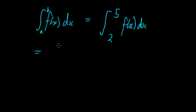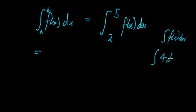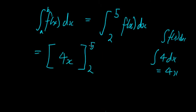So how do we solve this? What it means is we first integrate — we calculate as if the terminals 5 and 2 weren't there. So we integrate f(x) dx, and since the function is 4, integrating 4 dx gives us 4x. That means we now have 4x evaluated between 5 and 2. We move the terminals up, and we have the antiderivative 4x. Then we substitute the point 5 in, so we get 4 times 5.